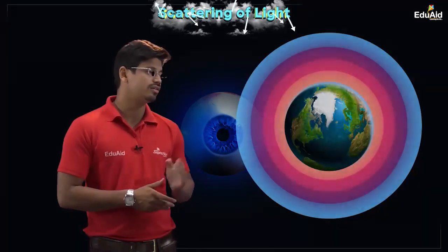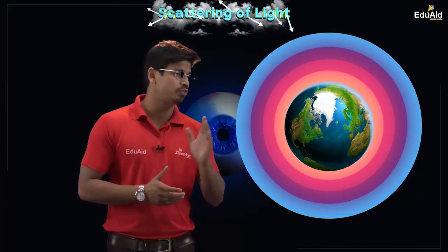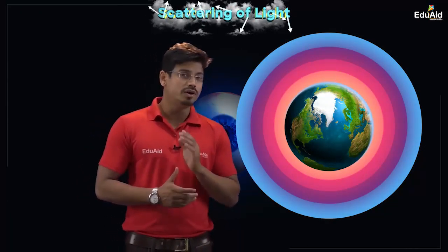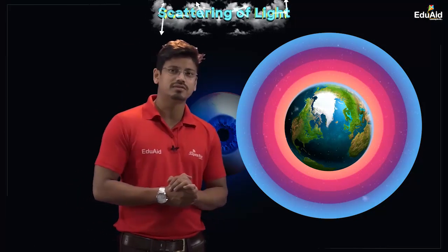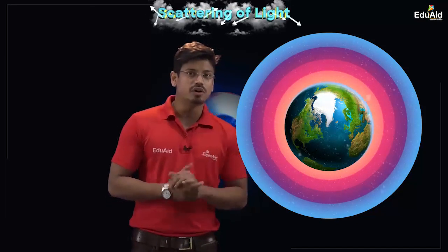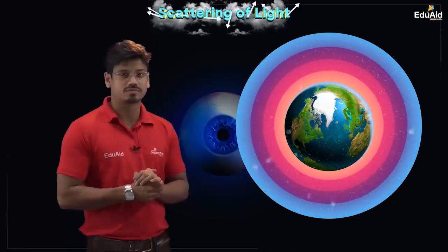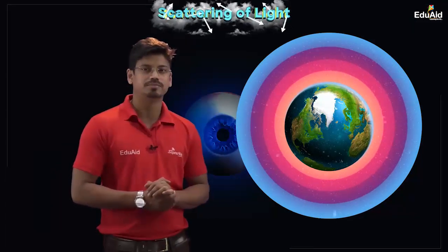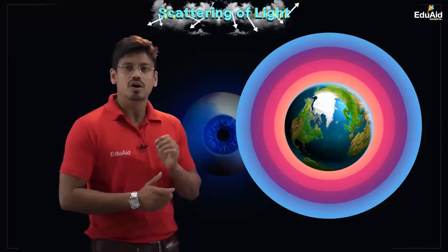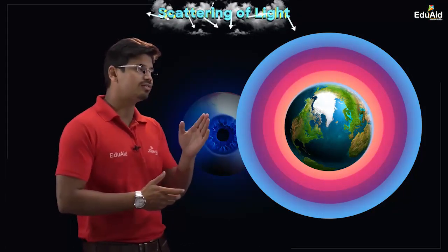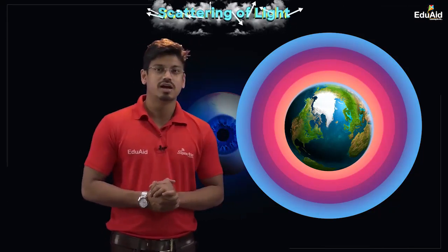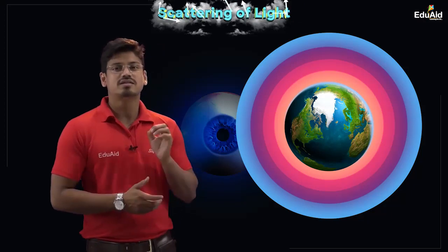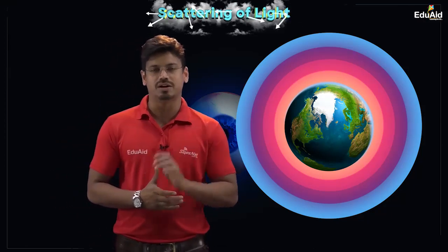For example, consider the earth's surface and the earth's atmosphere. The earth's atmosphere consists of dust particles, smoke, air molecules, and water molecules which are suspended in it. When light from a luminous or non-luminous body enters this earth's atmosphere, it encounters these suspended particles, and these suspended particles scatter the light in various random directions.